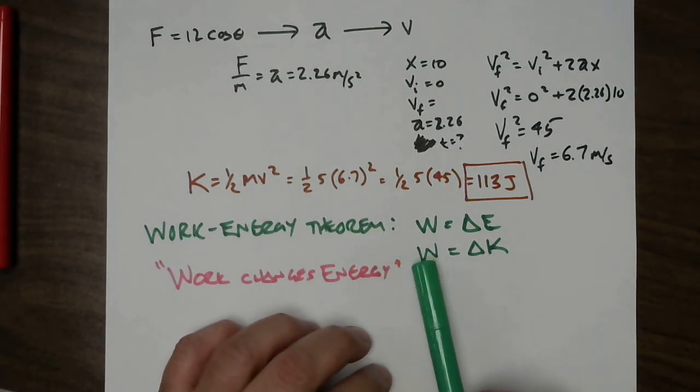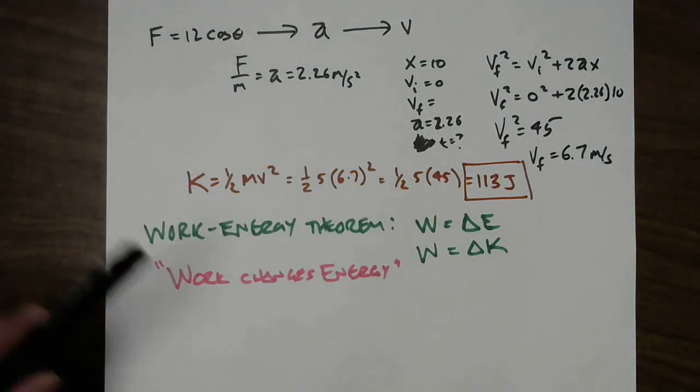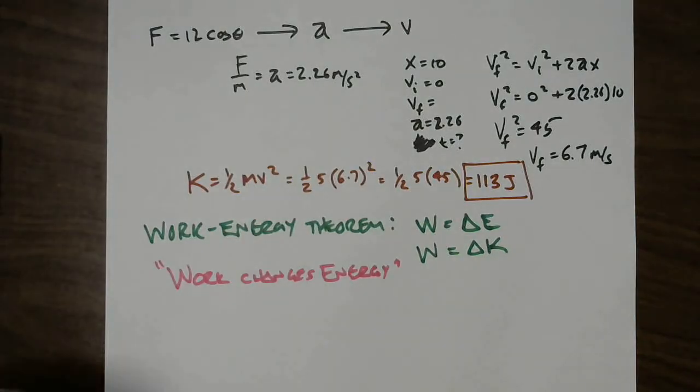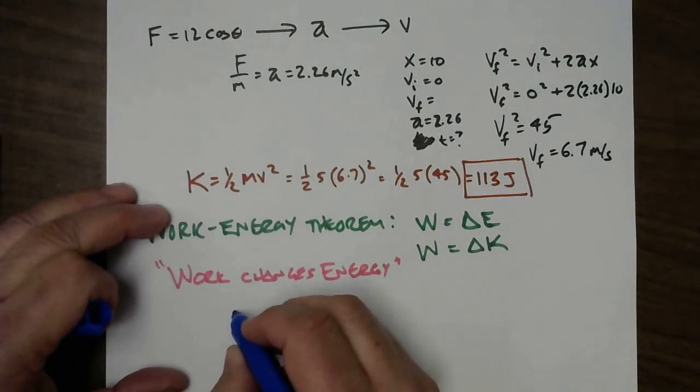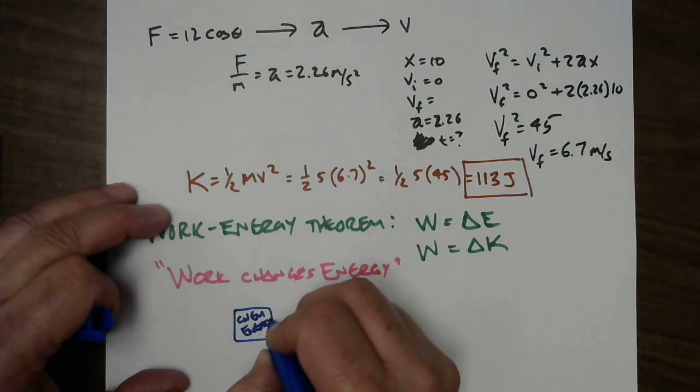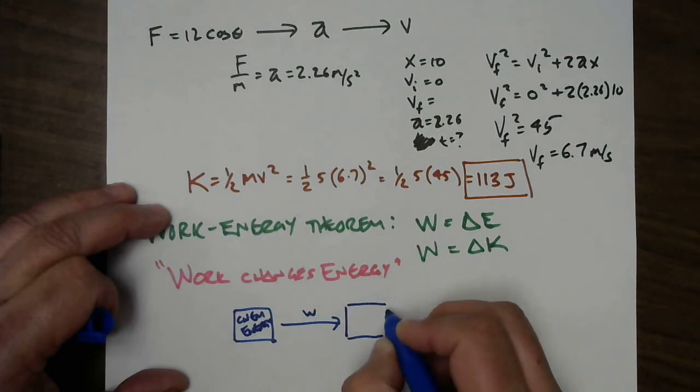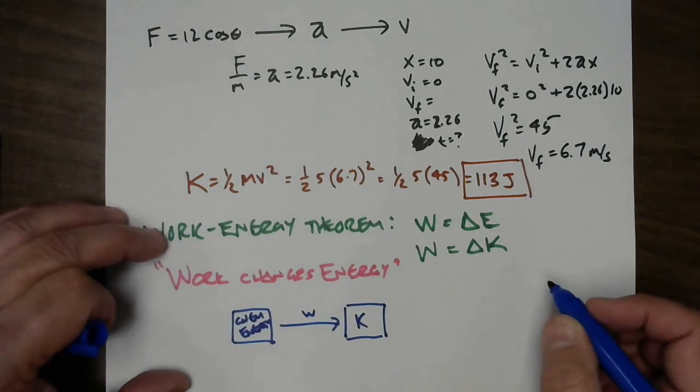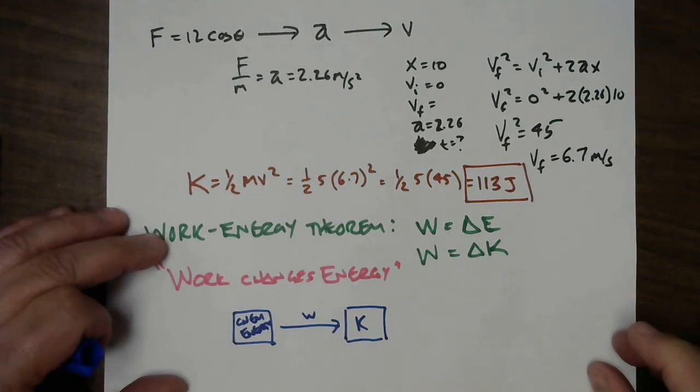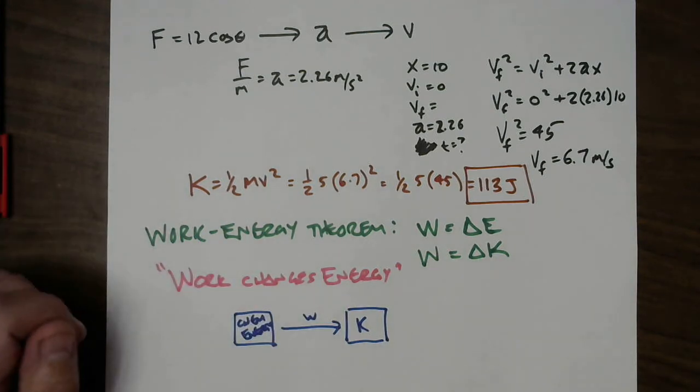And so that means that the amount of work done came from some other energy, and work is the bridge by which the energy moves. So you could think of it as the fact that inside your body you have chemical energy. And that work done by you changes some of your chemical energy into kinetic energy of the box. So work is this process. That's a great way to think of it. That's an introduction to work and kinetic energy. We'll do a little more in a few minutes.